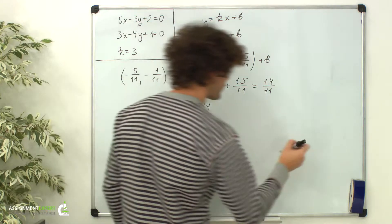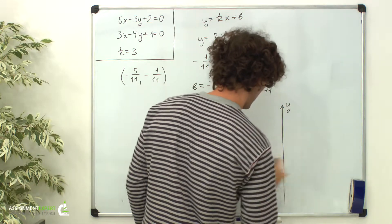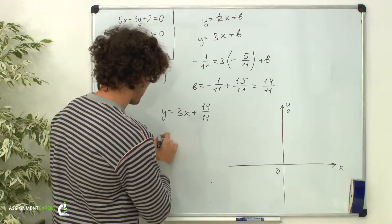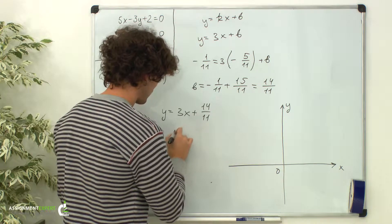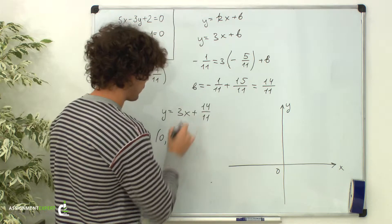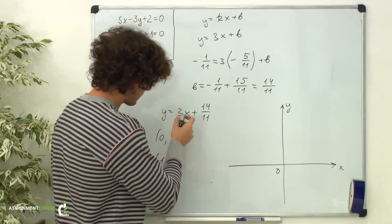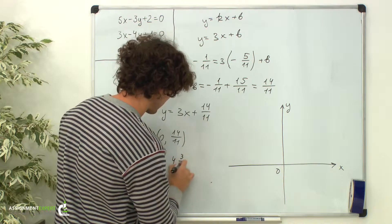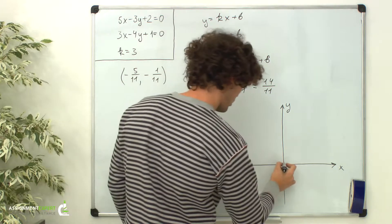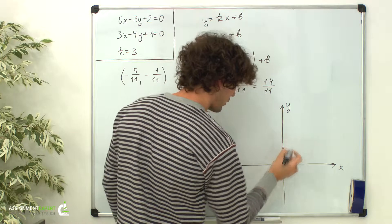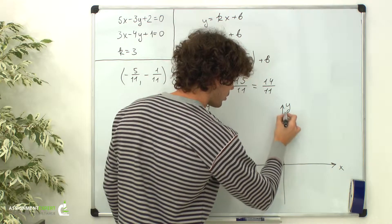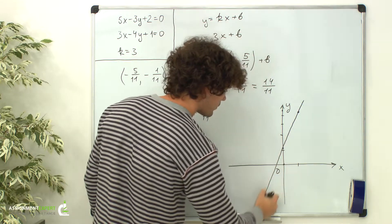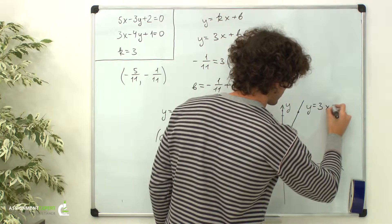Let's graph that line. Here is the y-axis, x-axis. Now we need to take two points on that line. For x equals 0, y equals 14/11. And for x equals 1, we have 3 plus 14/11, which is 4 and 3/11. The first point is over here, and the second one is up here. So here is the line: y equals 3x plus 14/11.